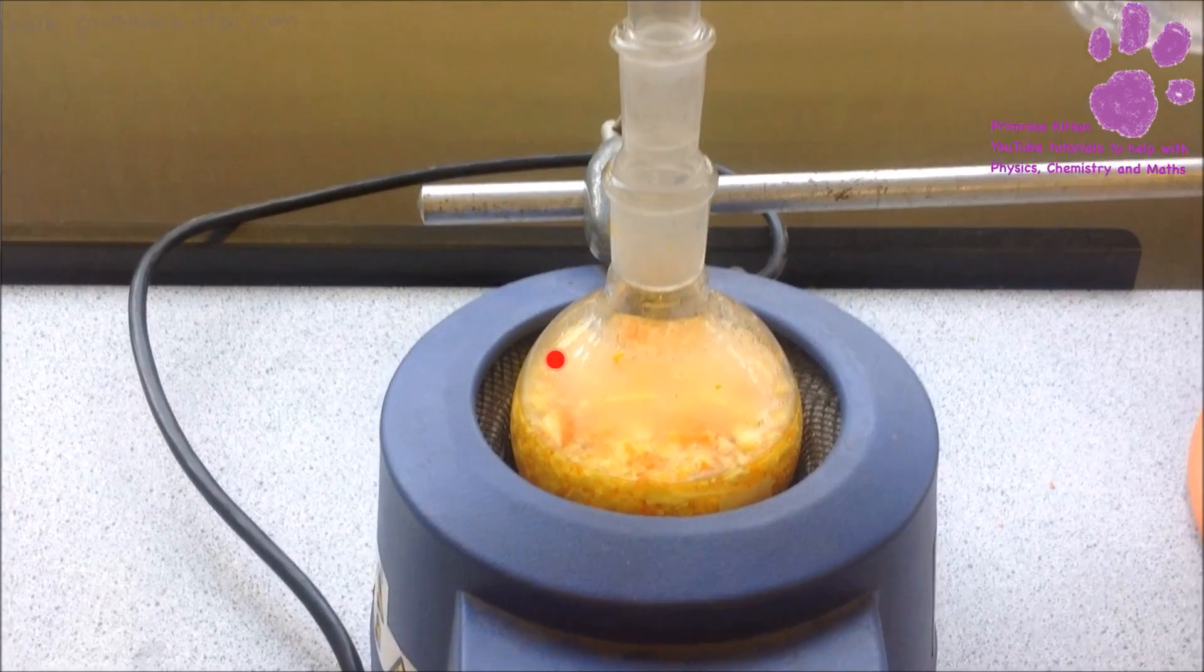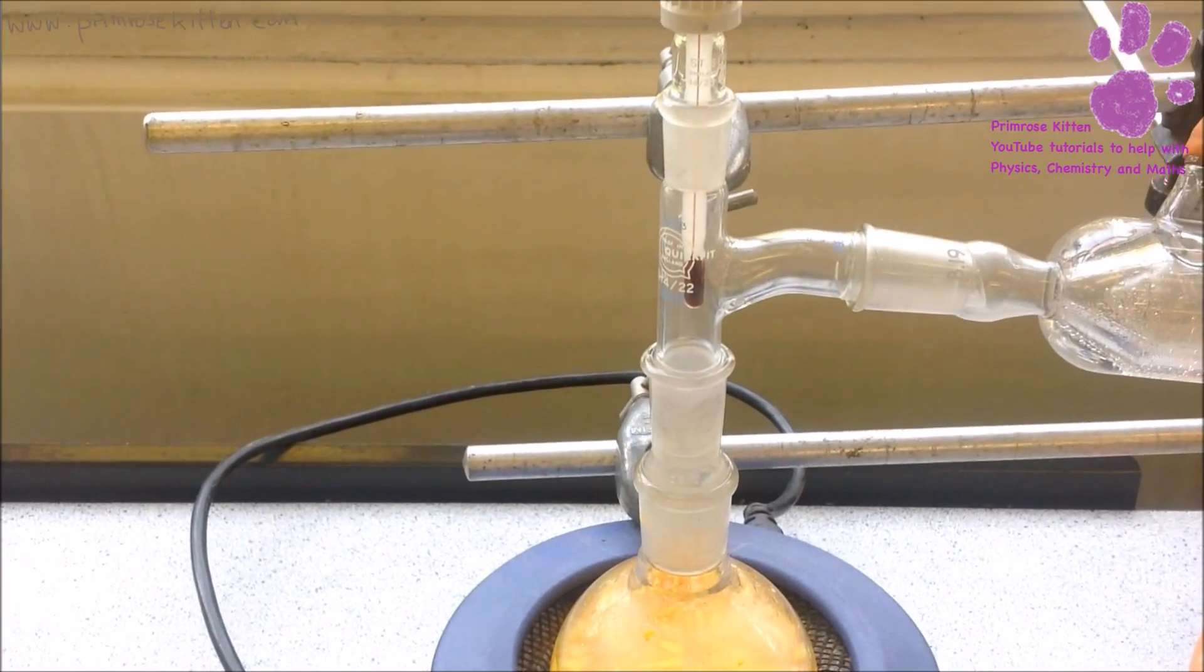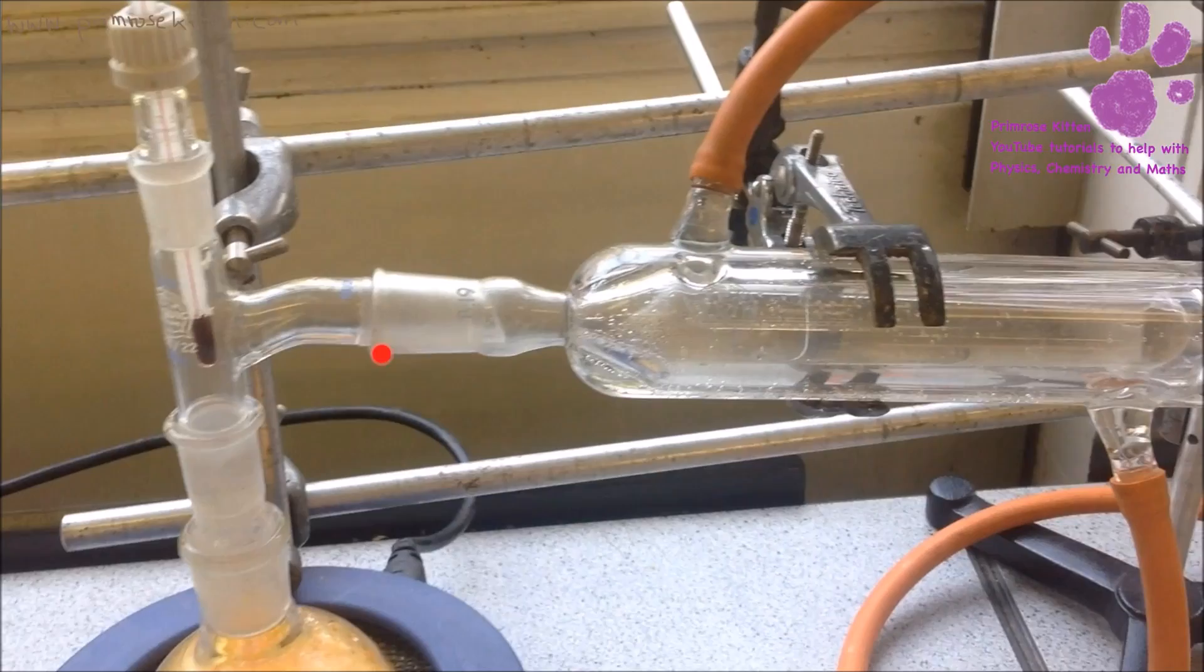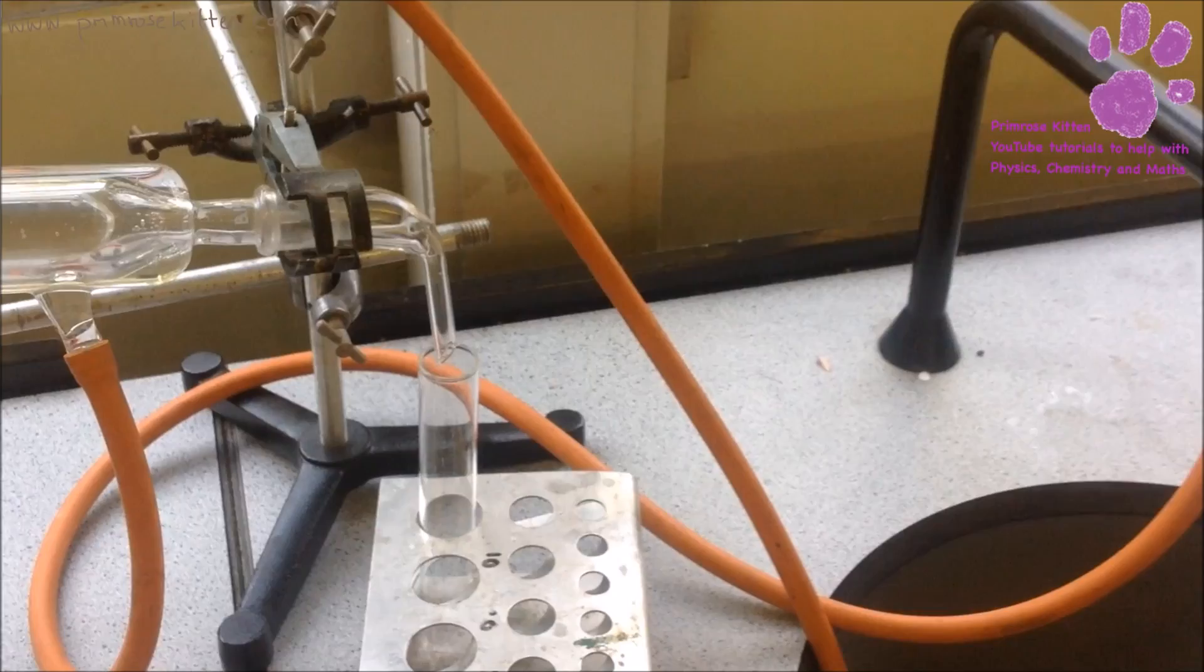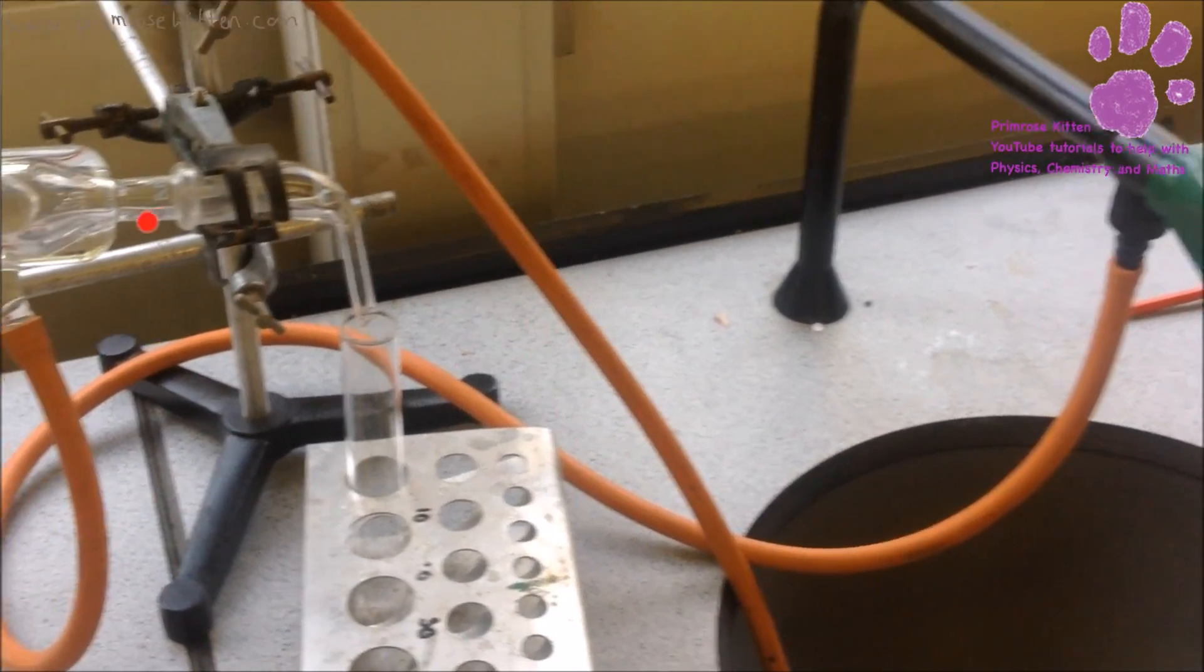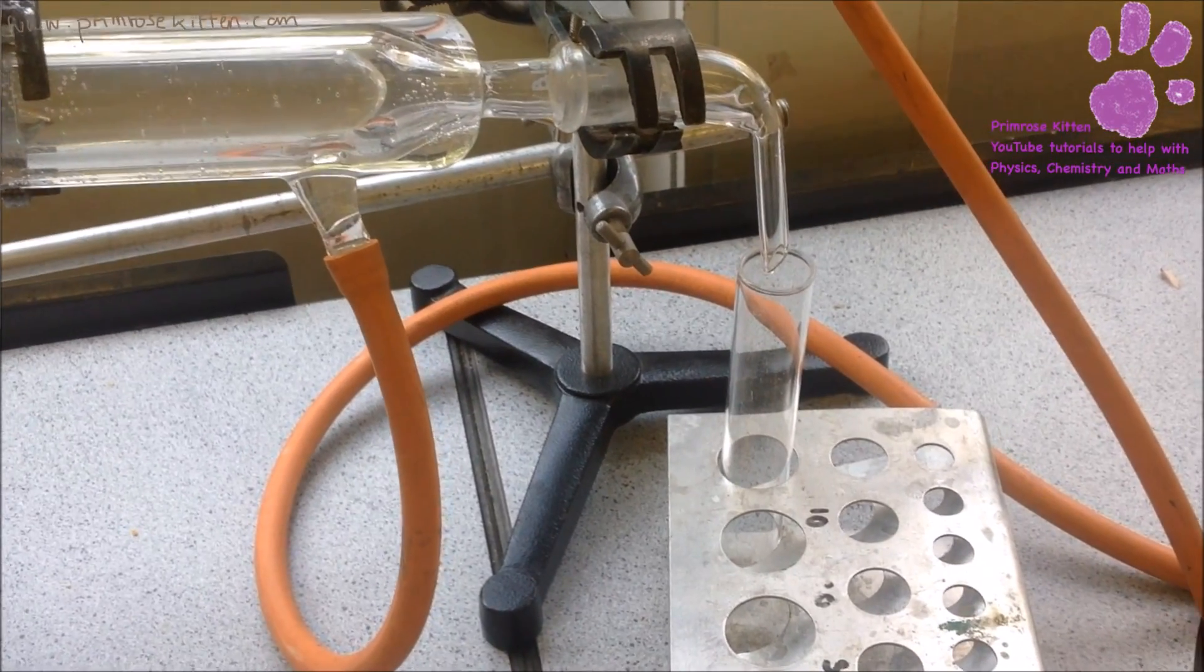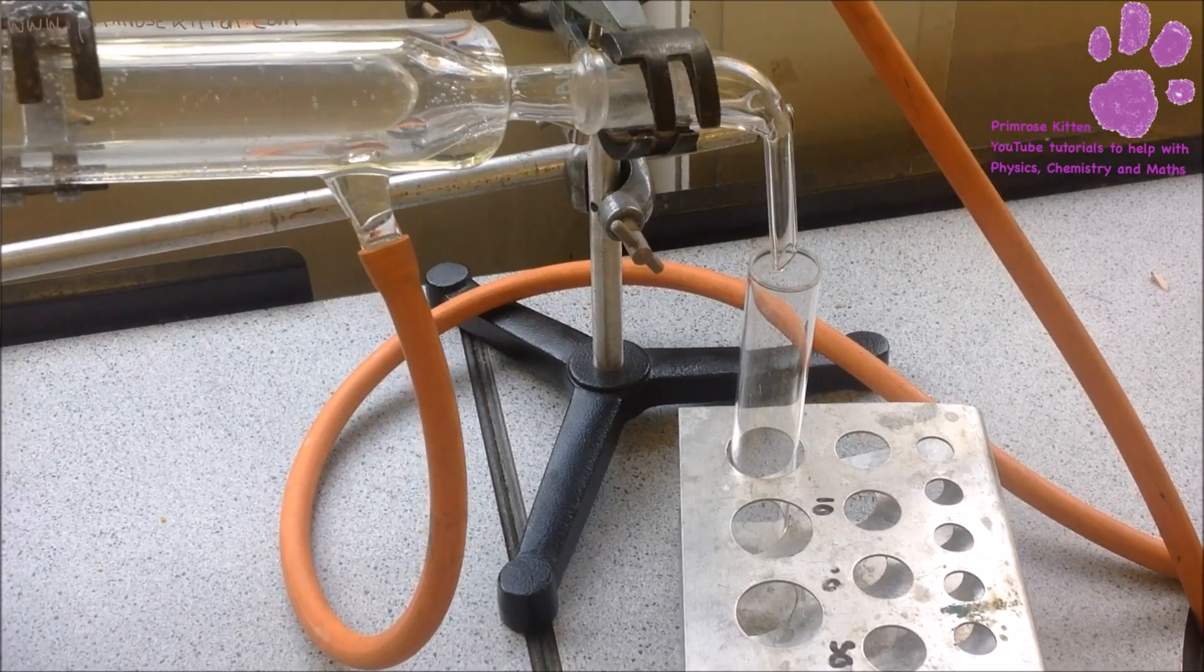You can see it's starting to get hot and evaporate. It will evaporate and come into here, which is the condenser. We have water going into the condenser, and then out here we'll collect the oil once it's separated out.